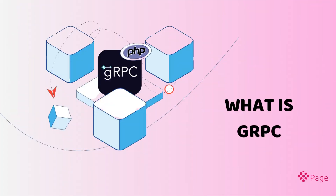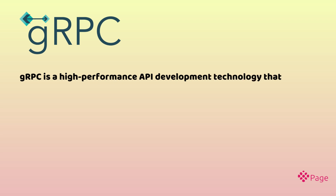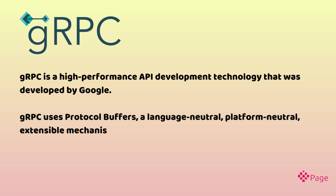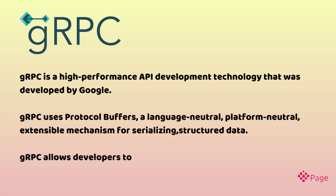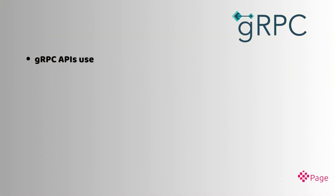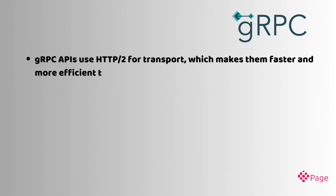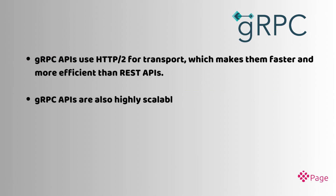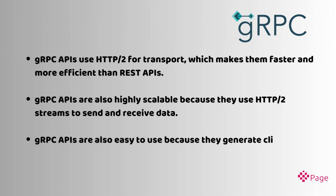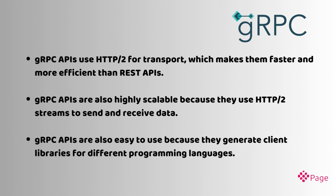What is gRPC? gRPC is a high-performance API development technology that was developed by Google. gRPC uses protocol buffers — a language-neutral, platform-neutral, extensible mechanism for serializing structured data. gRPC allows developers to define services and messages using protocol buffers. gRPC APIs use HTTP/2 for transport, which makes them faster and more efficient than REST APIs, and they are highly scalable because they use HTTP/2 streams to send and receive data. gRPC APIs also generate client libraries for different programming languages.